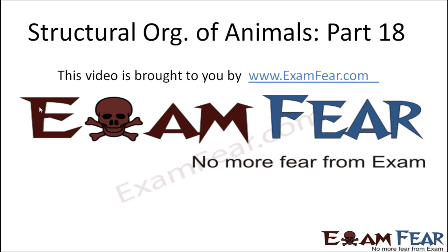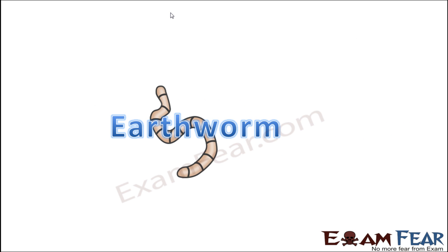Hello friends, this video on structural organization of animals part 18 is brought to you by examfear.com. Earthworm, as you all know, is a small creature which you often see creeping on the ground. They burrow and live under the soil, so maybe in your garden or places with damp soil you can see many earthworms. After this video, whenever you see an earthworm, you'll know how they digest, walk, excrete, and respire. It's going to be interesting.